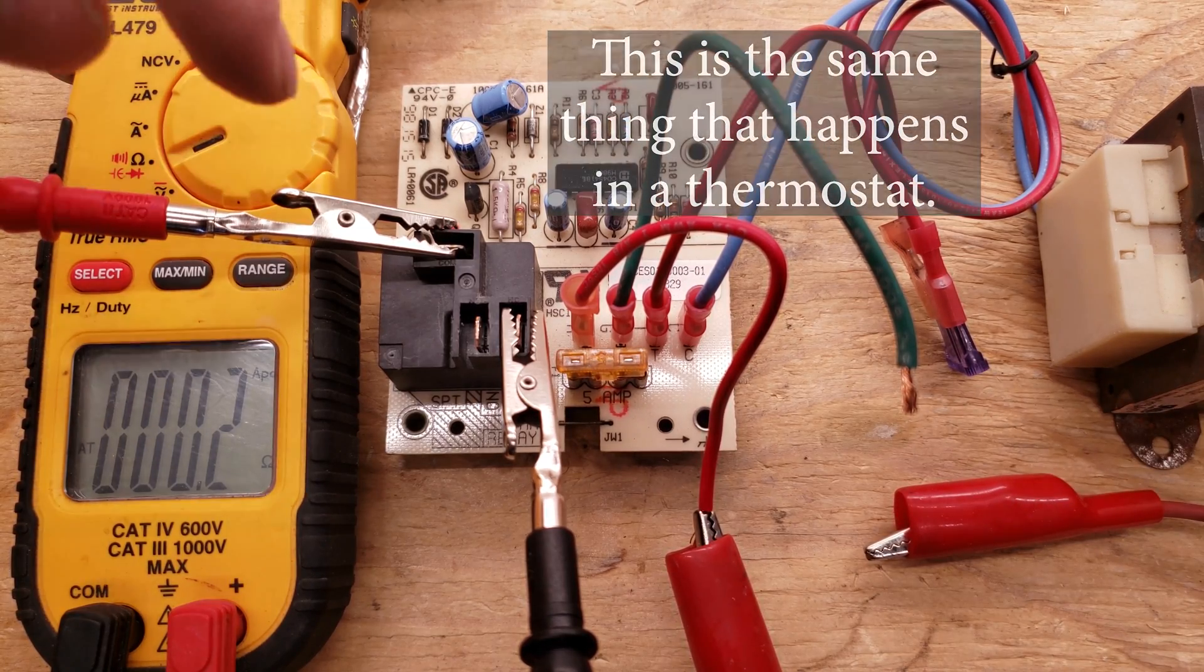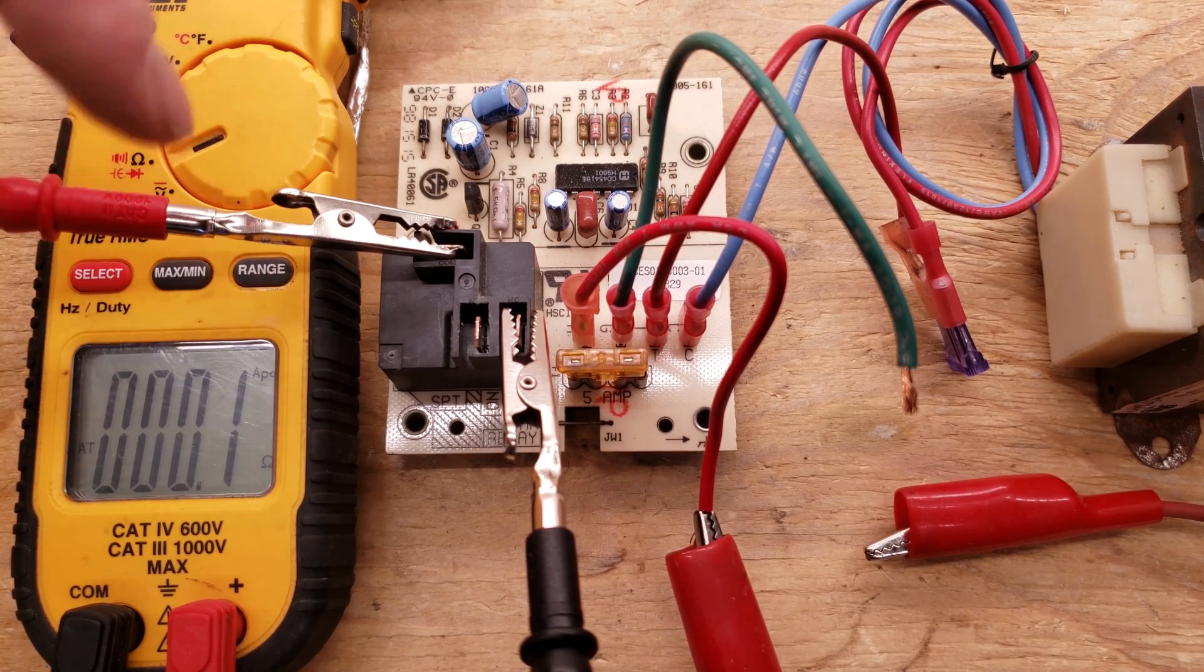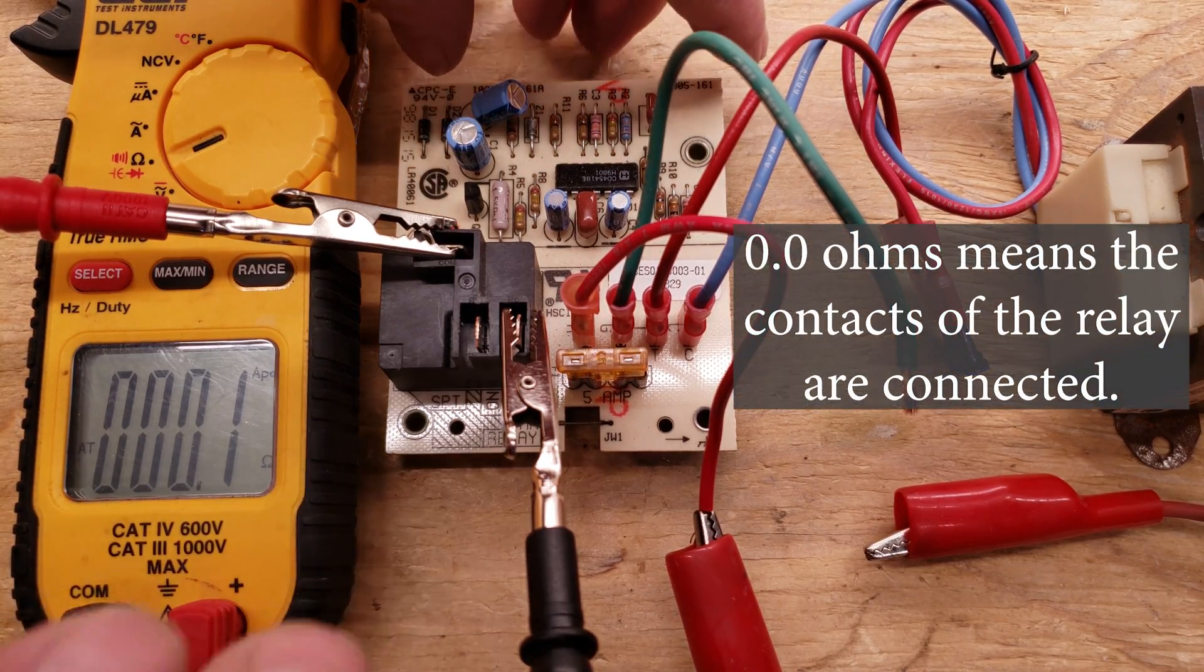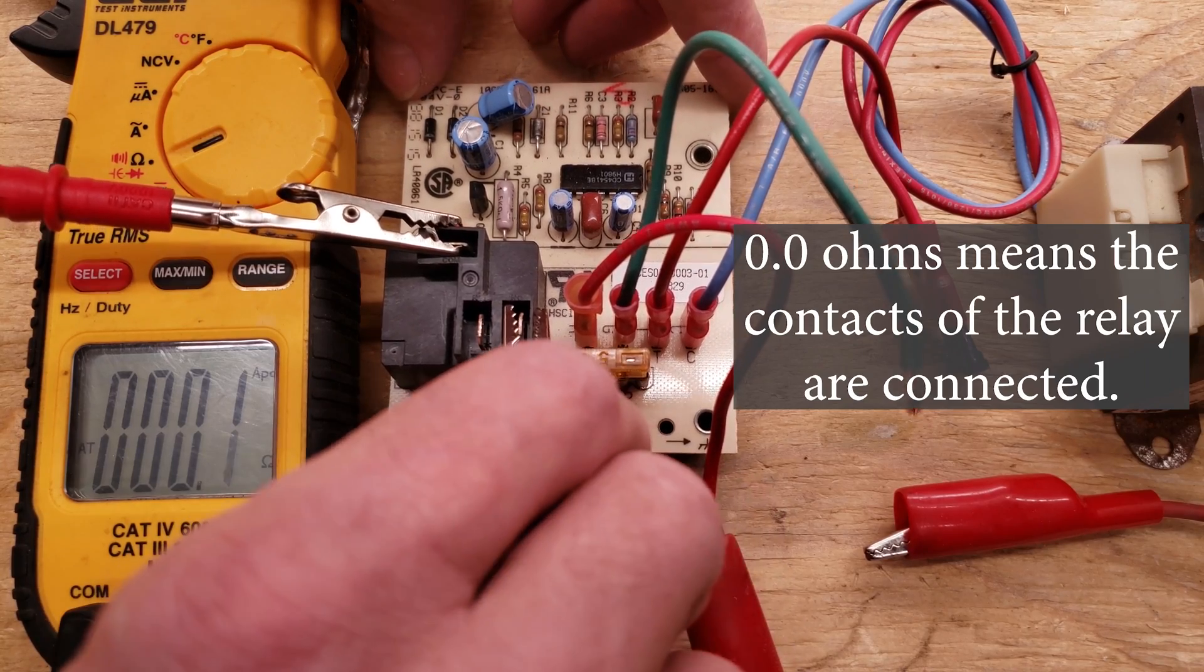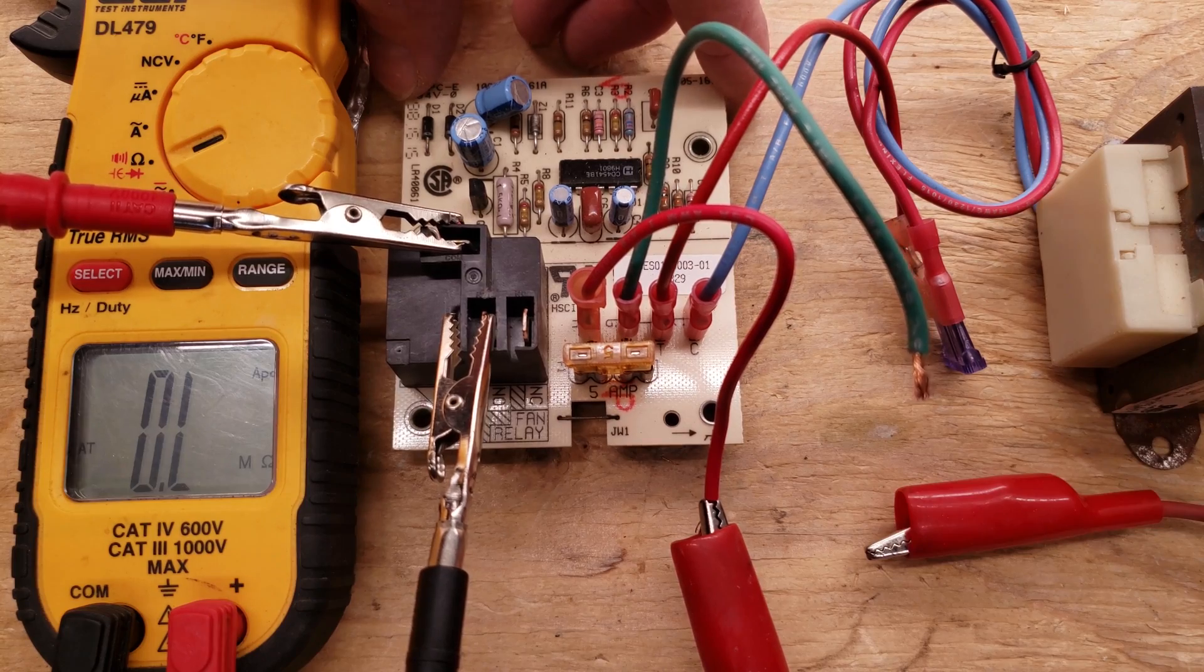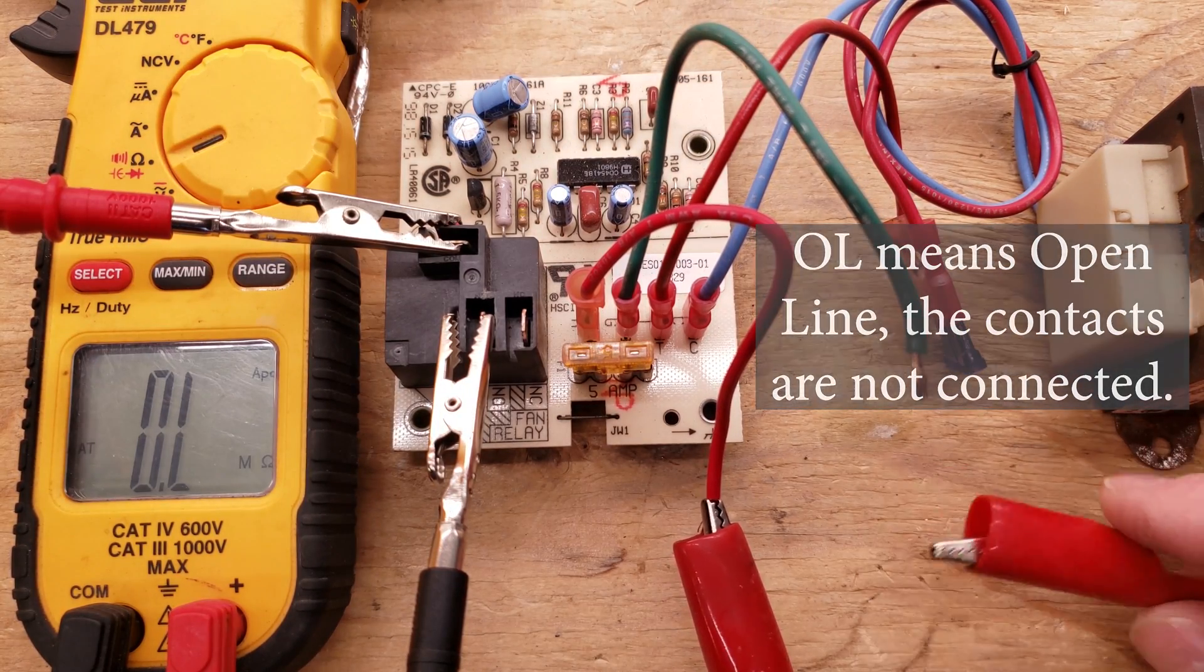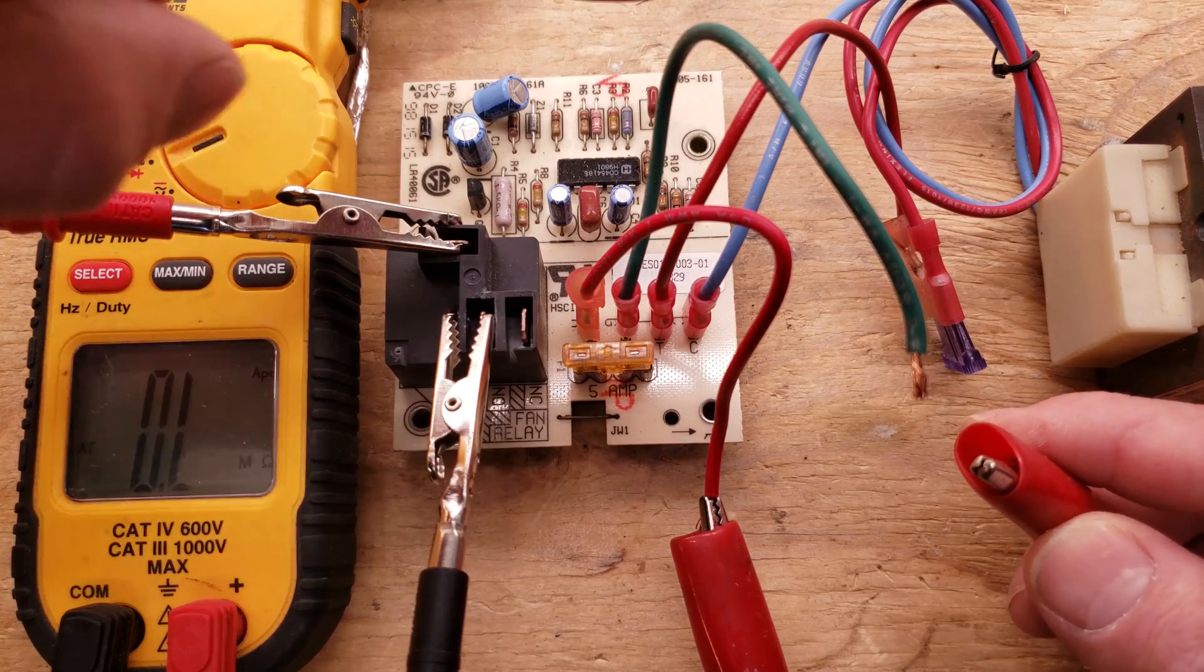So right now we're on our relay terminals with our multimeter reading our resistance value of 0.1 ohms. We're right about 0.0 ohms of resistance. We're going to go ahead and move this over to this terminal right here, which is the NO, and you see that we're reading OL. Now let's go ahead and jump over to our green right here.